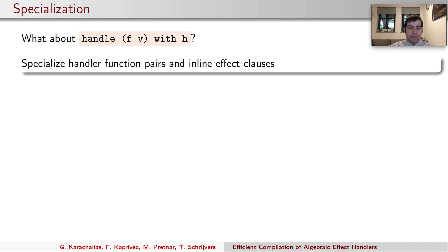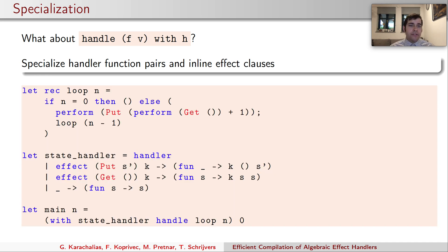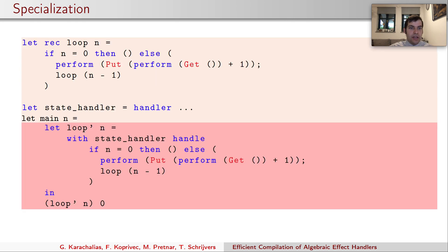Here we're gonna specialize the handler and directly inline effect clauses and return clause. Let's see this in a simple example. We first define a loop as before and wrap it in the same state handler as before. And here the specialization happens. The compiler firstly adds a new function called loop prime where state handler is wrapped around the body of the original function and replace all uses of loop in the main part with the loop prime.